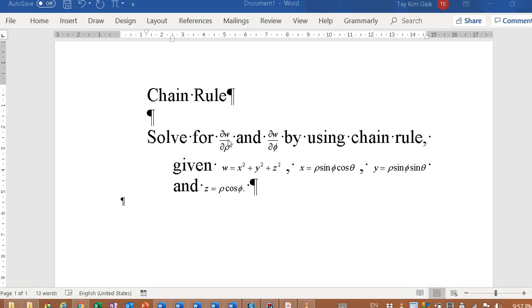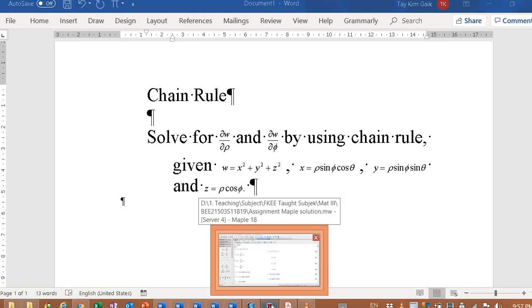Solve for del w del rho and del w del phi by using chain rule. Given w is actually x squared plus y squared plus z squared and x is equal to rho sin phi cos theta, y is rho sin phi sin theta, and z is rho cos phi. Okay, I'm going to do it using Maple.